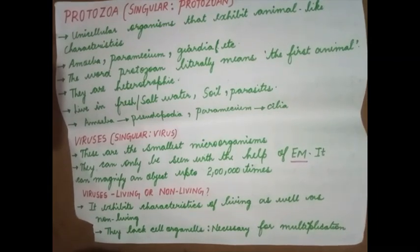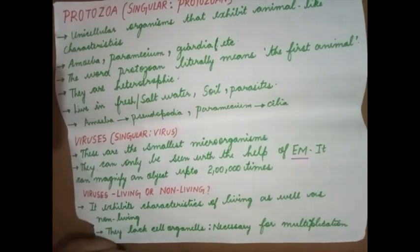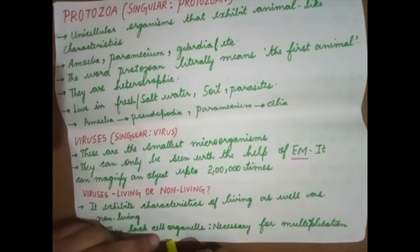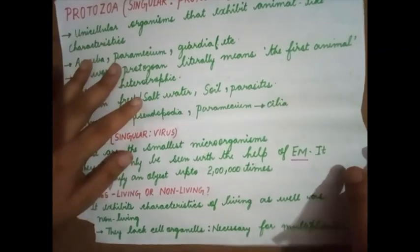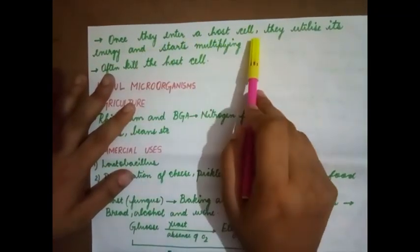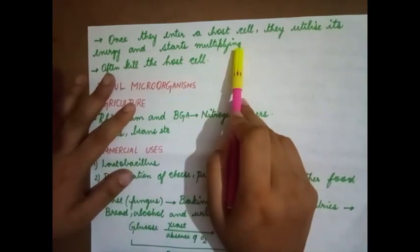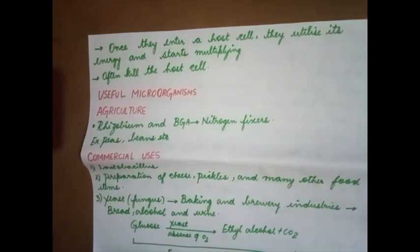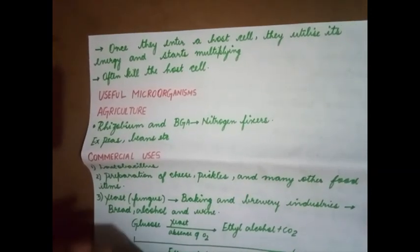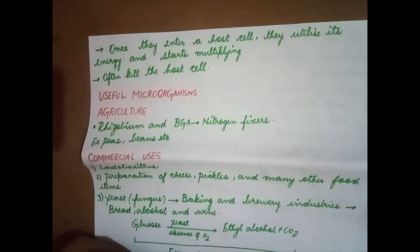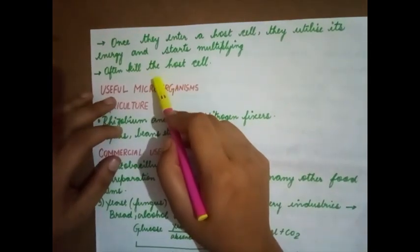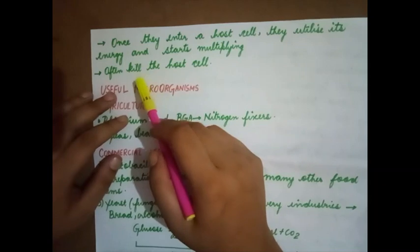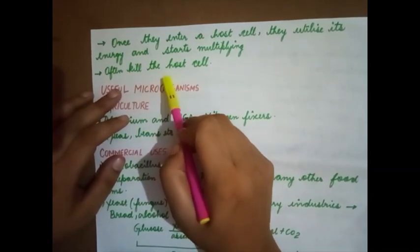Once inside the host, the virus exhibits characteristics of a living organism. Viruses do not have any cell organelles — structures that help regulate the functions of a cell. Since these organelles are absent, the virus cannot reproduce on its own. Once it enters a host cell, it utilizes the host cell's energy and machinery to start multiplying. Sometimes the virus kills the host cell in the process.